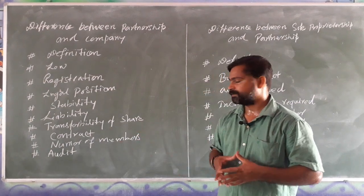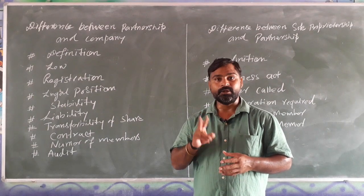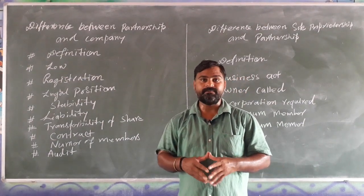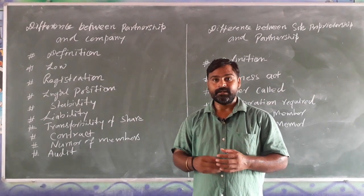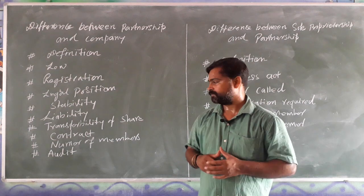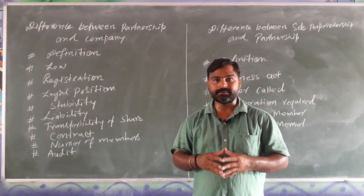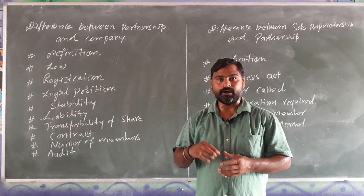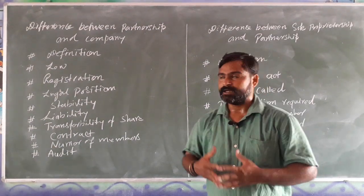For number of members, in a partnership the minimum is two and the maximum is one hundred. In a joint stock company, the minimum number of members is seven and the maximum is no fixed limit — it may be limited only by the number of shares. For audit, the account audit of a partnership is not compulsory, but for a company the audit of books of accounts is compulsory.